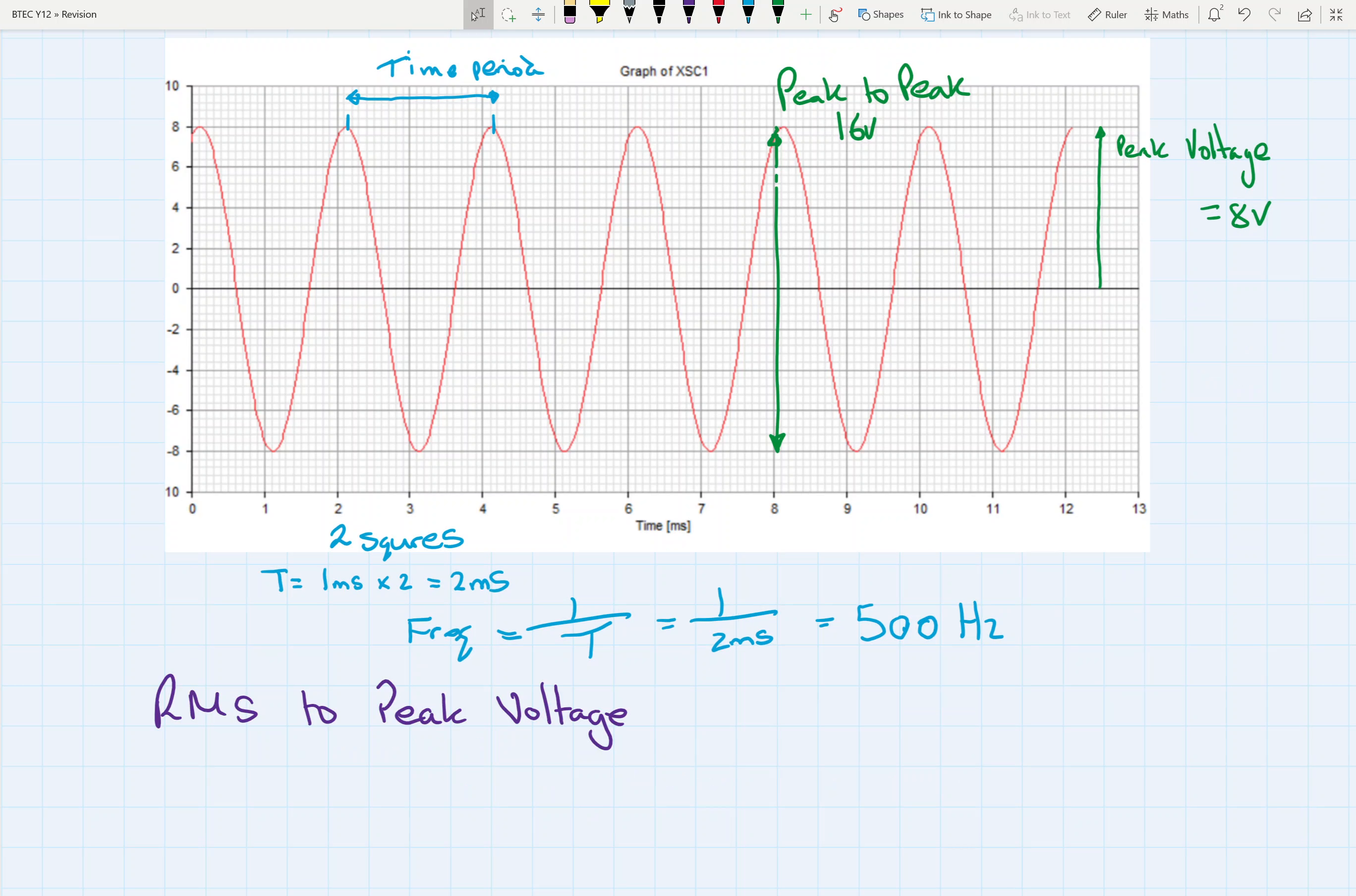So the next thing I want to work out is RMS to peak voltage. RMS being root mean squared. A bit of a wishy-washy definition, but all of our AC signals are quoted in RMS voltages. And it's sort of the equivalent voltage if we had a DC power supply. That's what the RMS would be. But we do any calculations with peak voltage, because quite often it's referred to in RMS.